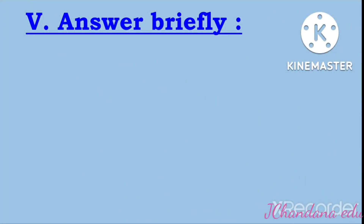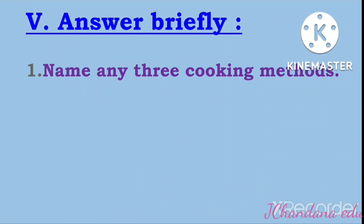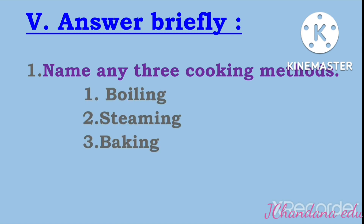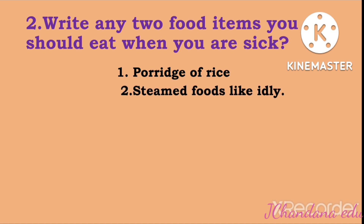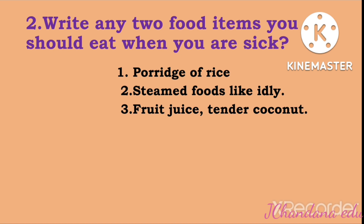Section five: Answer briefly. First question: Name any three cooking methods. Answer: Boiling, steaming, baking. Second question: Write any two food items you should eat when you are sick. Answer: Porridge of rice, steamed foods like idli, fruit juice, and tender coconut.